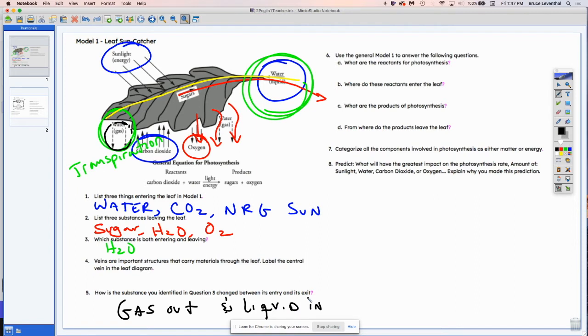Use the general model one to answer the following questions. What are the reactants of photosynthesis? So reactants go in. So we have water plus carbon dioxide. Those are physical reactants. We also have light energy. So where do these reactants enter the leaf? Note that CO2 comes in on the surface and water comes in through the vein.